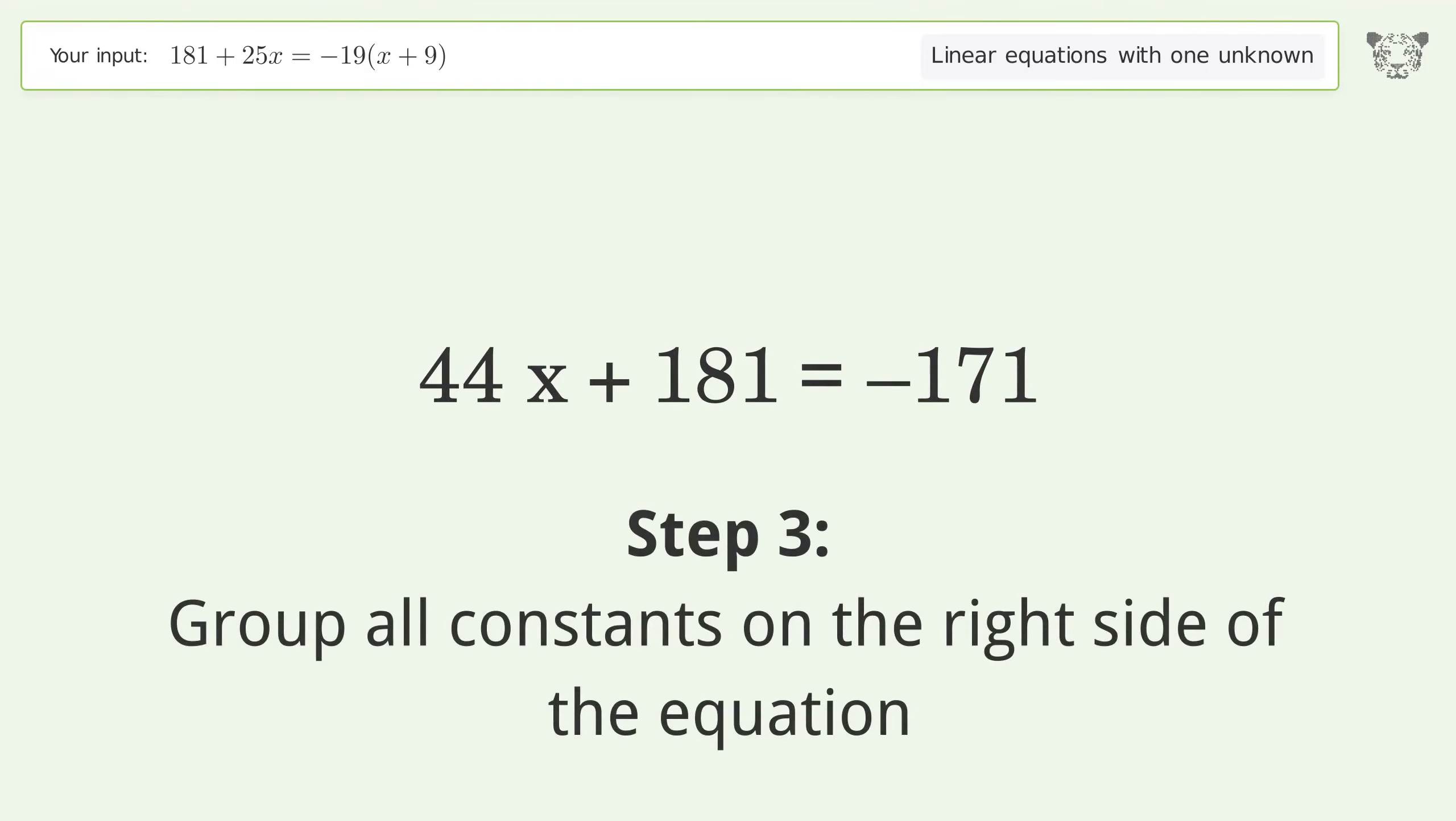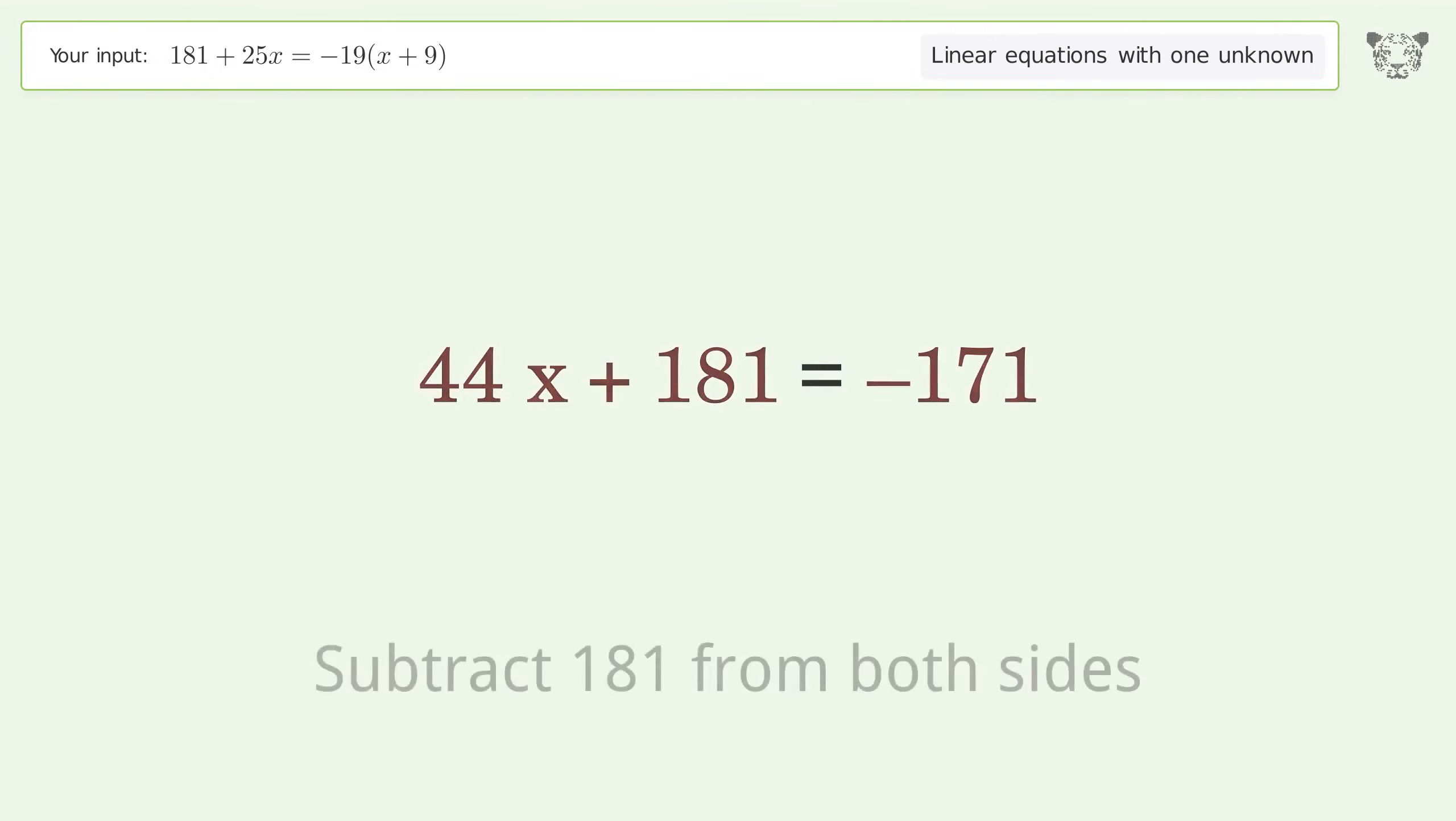Group all constants on the right side of the equation. Subtract 181 from both sides. Simplify the arithmetic.